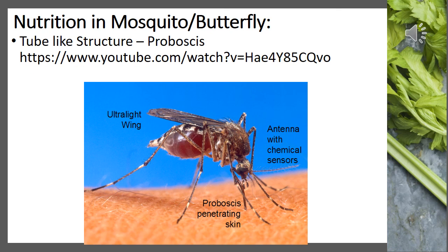When it comes to nutrition in mosquitoes, they have a tube-like structure called a proboscis attached to their mouth, which they use to suck the blood of animals and humans. Butterflies also use their proboscis to suck nectar from flowers. A link has been provided where you can see how the mosquito sucks blood with the help of the proboscis.